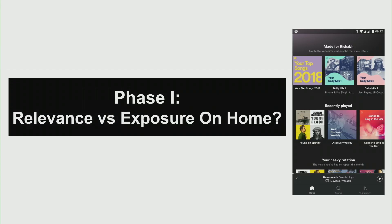We're going to talk about relevance versus exposure on the Spotify homepage. So far we looked at relevance-specific models, but now we also want to care about exposure of artists. In these marketplaces there's a long-tail problem: you have a super-popular head and then a long tail of artists and suppliers that are not exposed equally. The same happens on Google and Bing, where a large fraction of queries go to a handful of dominant destinations.